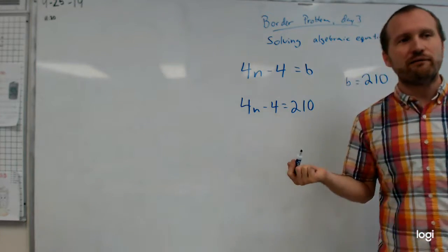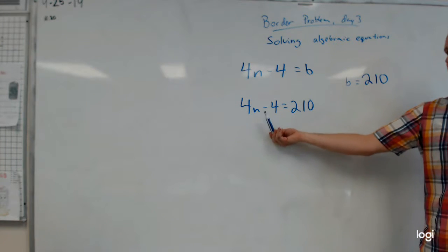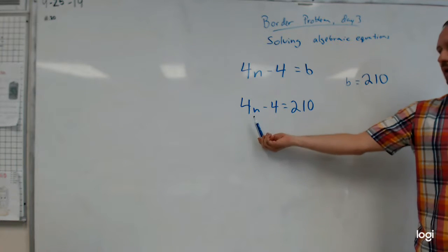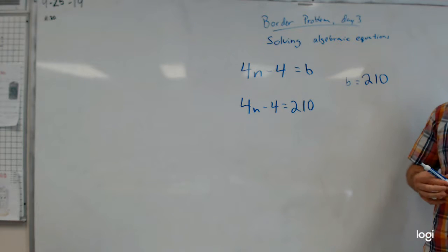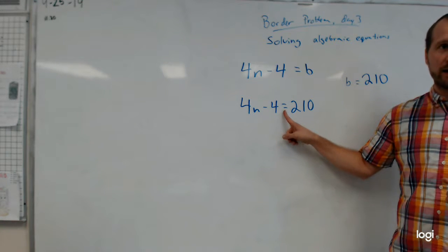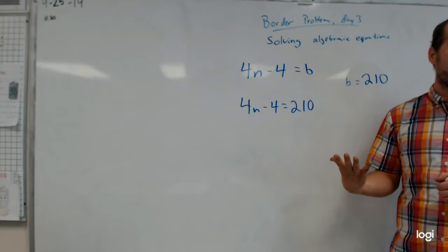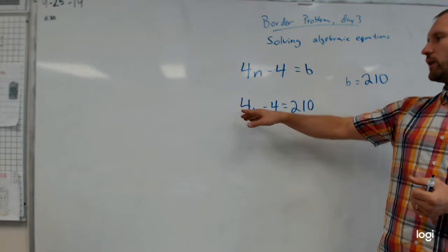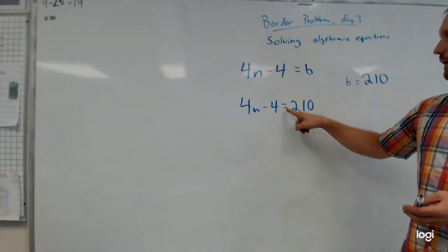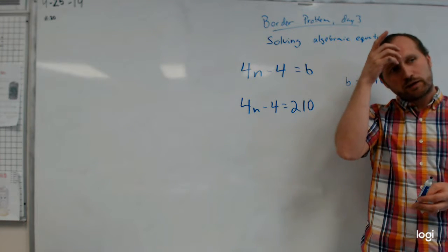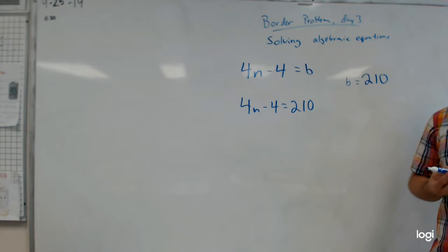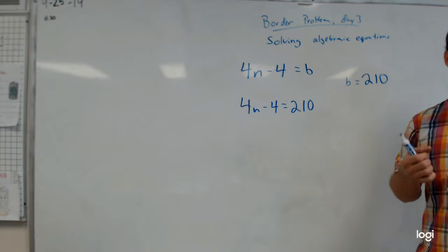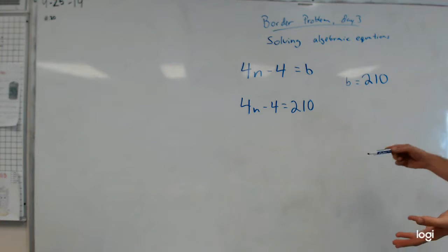And that gives me something really special which we haven't seen really a lot of yet this year. But this is an algebraic equation with one variable. And in general if you have an algebraic equation, meaning you have an equal sign and you have one variable, you can solve that. Now sometimes you can solve these by kind of looking at them and thinking I'm looking for a number where four times that number minus four is going to give me 210. So you can kind of reason through these. But there is another way to solve algebraic equations.